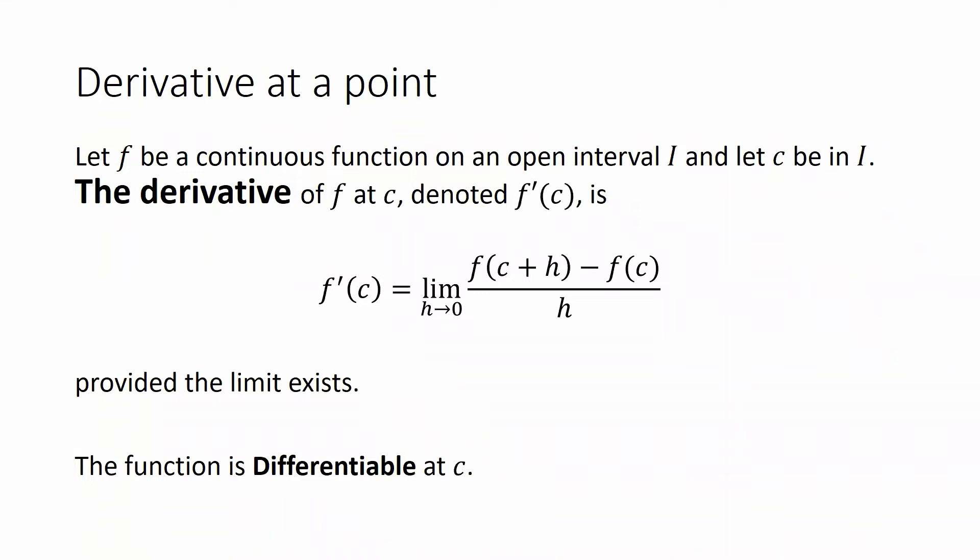This idea of instantaneous rate of change at a single value is what the derivative of a function at a point is. So if we let f be a nice continuous function on an open interval, and we let c be some value in that interval, the derivative of f at c, which is always denoted by f prime of c, is equal to the instantaneous rate of change at the value of c.